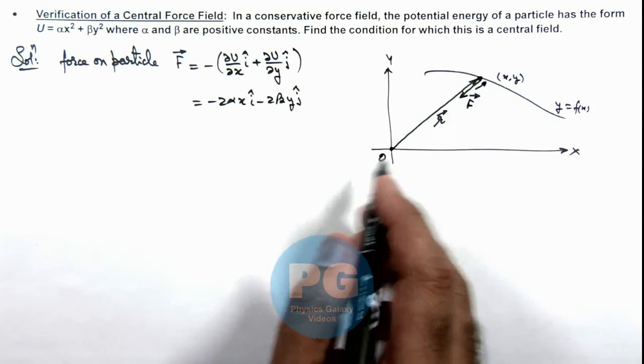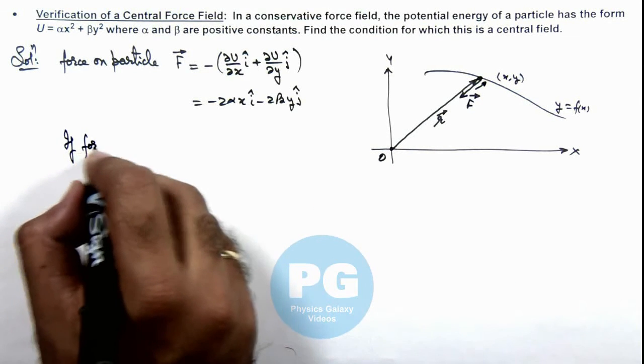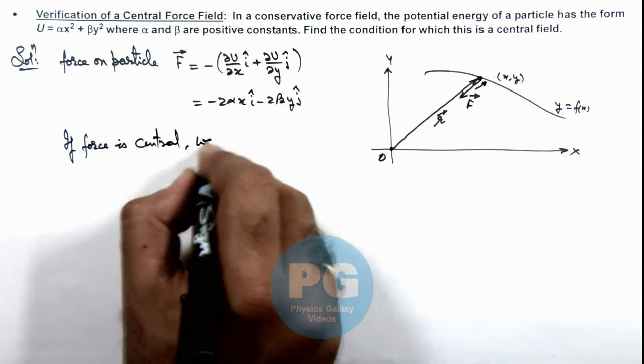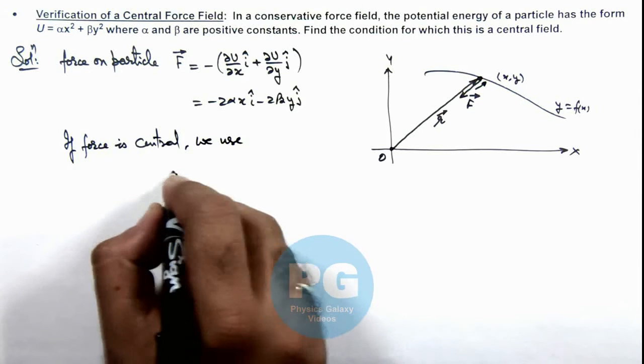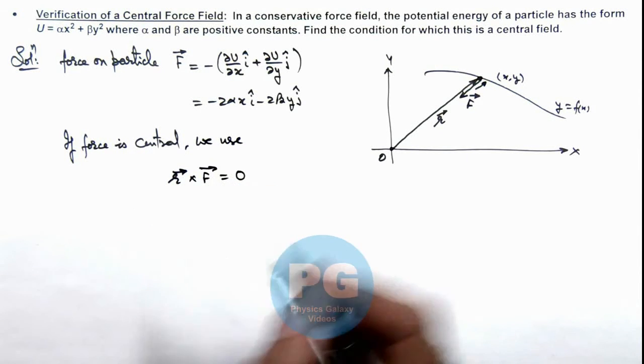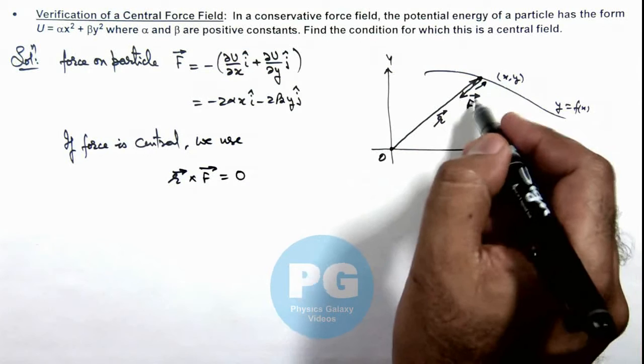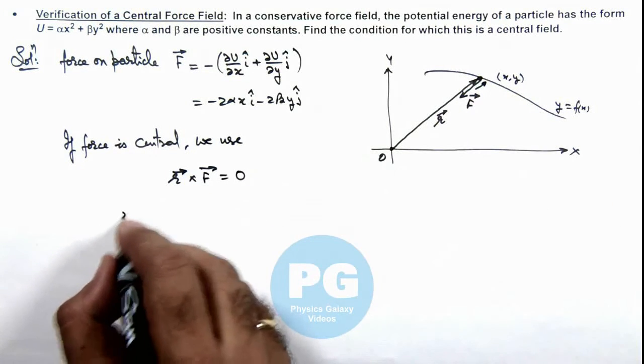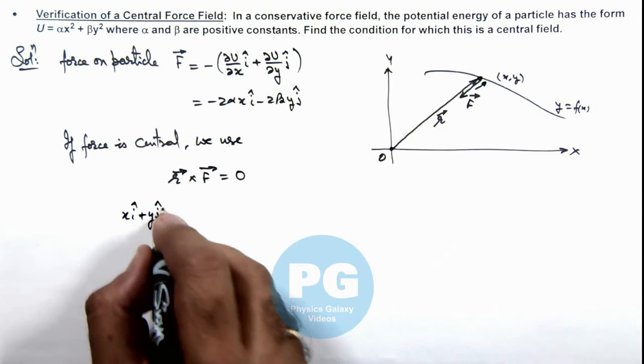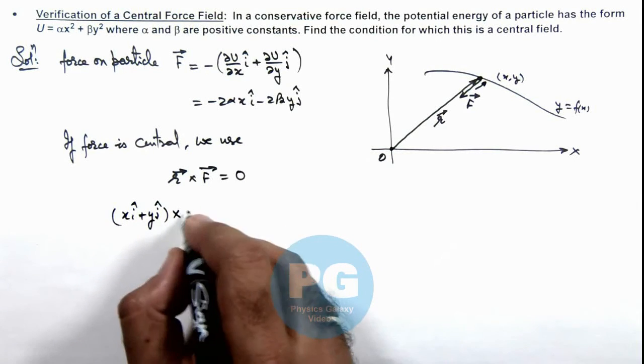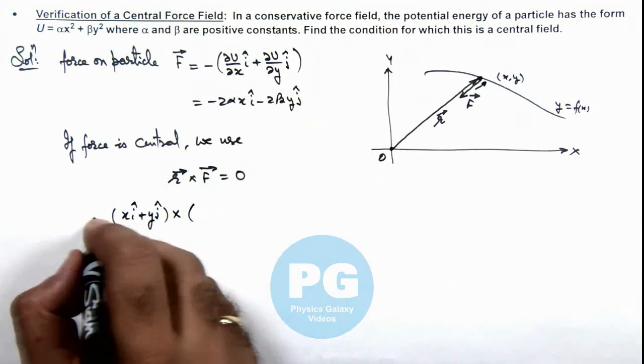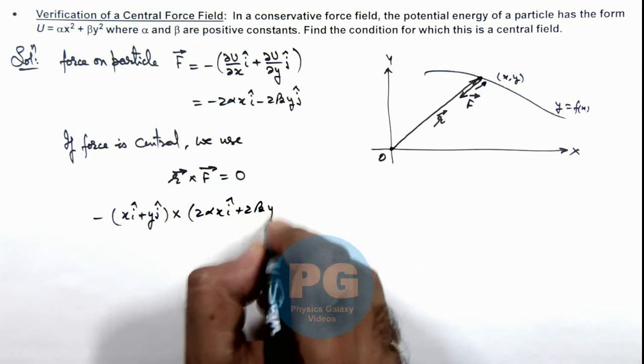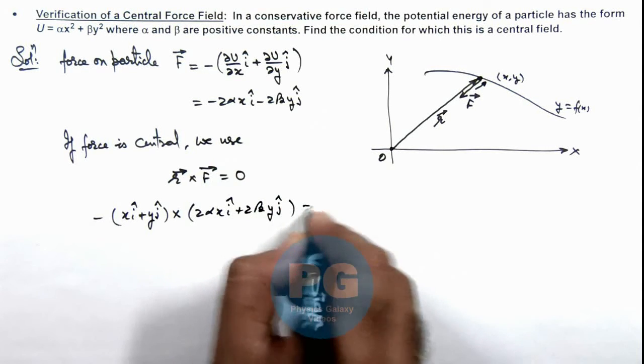If the force is central, we use r × F = 0, because F and r must be either parallel or antiparallel. So r = x î + y ĵ. We take its cross product with the force vector F = -2αx î - 2βy ĵ and set it equal to zero.